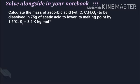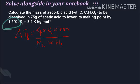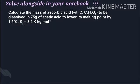This question basically belongs to our depression of freezing point colligative property. The relation we use is: ΔTf = Kf × w₂ × 1000 / (m₂ × w₁). We need to find w₂, the mass of ascorbic acid. Delta Tf is given as 1.5.